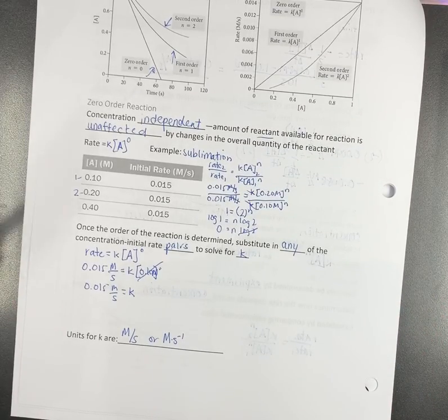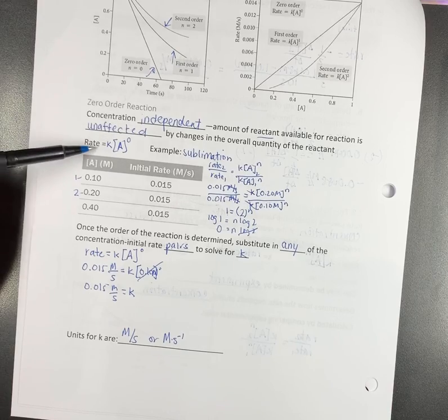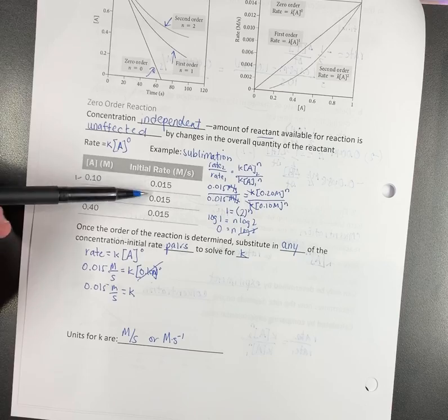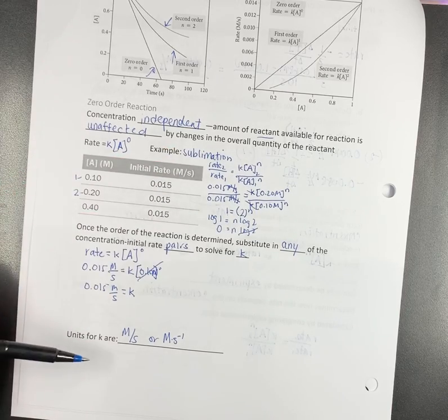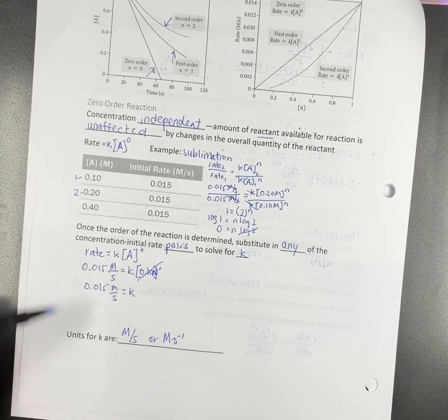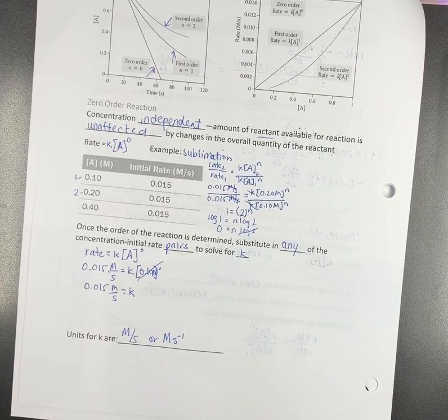Summarize. Zero order reaction. Rate is in the format K times A to the zero. Plug in the formula. Find out it's a zero order reaction. Then you plug in your pairs, solve for K. Units for K, you're always going to be in molarity per second. Do you think this is easy? Really confused. Who wants to go home? Not yet.